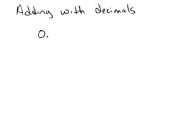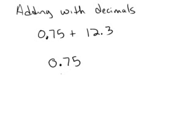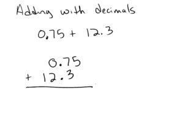Let's try 0.75 plus 12.3. Again, I need to have these lined up. So I'm going to rewrite them so that the decimals are lined up. And again, I have these weird places where there's no numbers. So I'm just going to go ahead and put some zeros in there and it's okay.